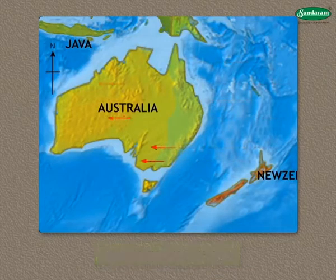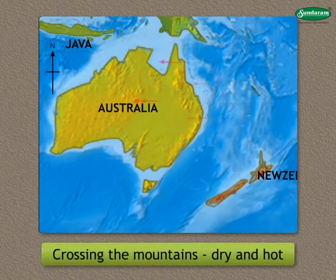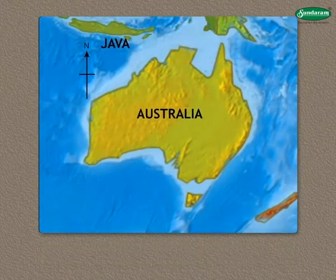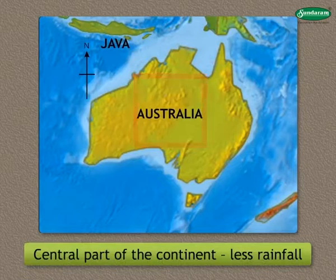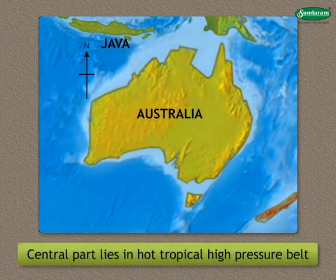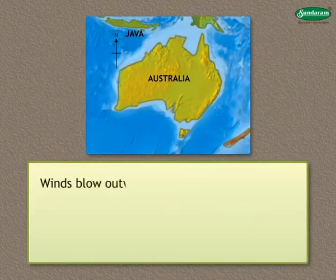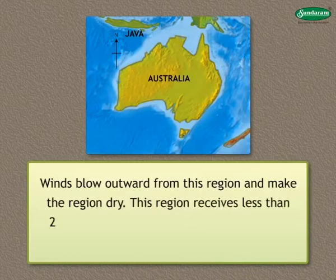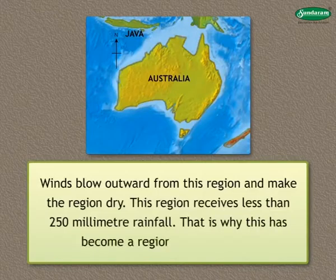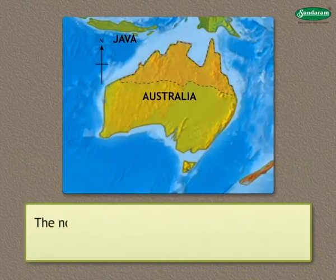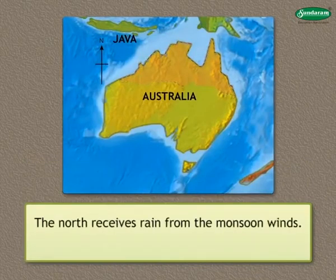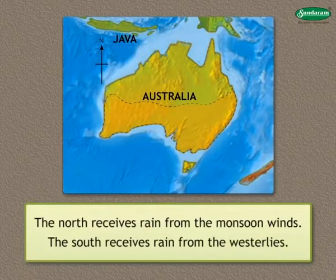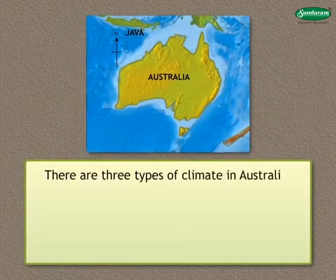As the winds go westwards, crossing the mountains, they become dry and hot. As a result, the central part of the continent receives less rainfall. The central part lies in the hot tropical high-pressure belt. Hence, winds blow outward from this region and make the region dry. This region receives less than 250 millimetres of rainfall. That is why this has become a region of hot deserts. The north receives rain from the monsoon winds. The south receives rains from the westerlies.